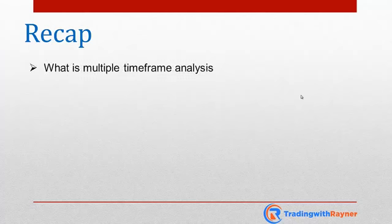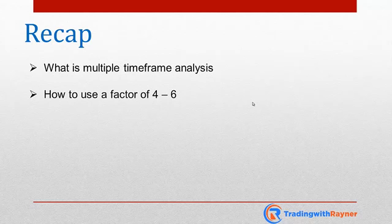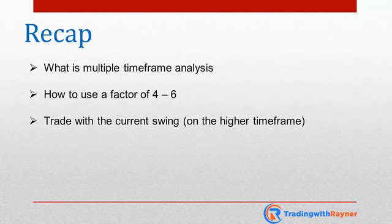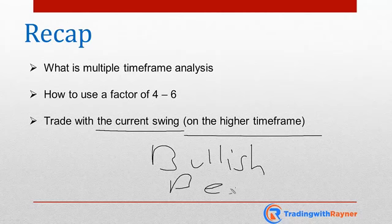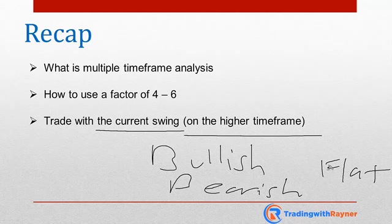Let's do a quick recap. First, I shared what multiple timeframe analysis is and how we can combine candles on the lower timeframe to form a higher timeframe candle. Then I shared how to use a factor of four to six to define your entry timeframe and higher timeframe. Last but not least, I explained why you need to focus on the current swing on the higher timeframe. Anything outside the current swing is basically noise. The only thing you focus on is: is the current swing bullish, bearish, or flat? If flat, stay out. If bullish or bearish, trade along the path of least resistance on your entry timeframe.